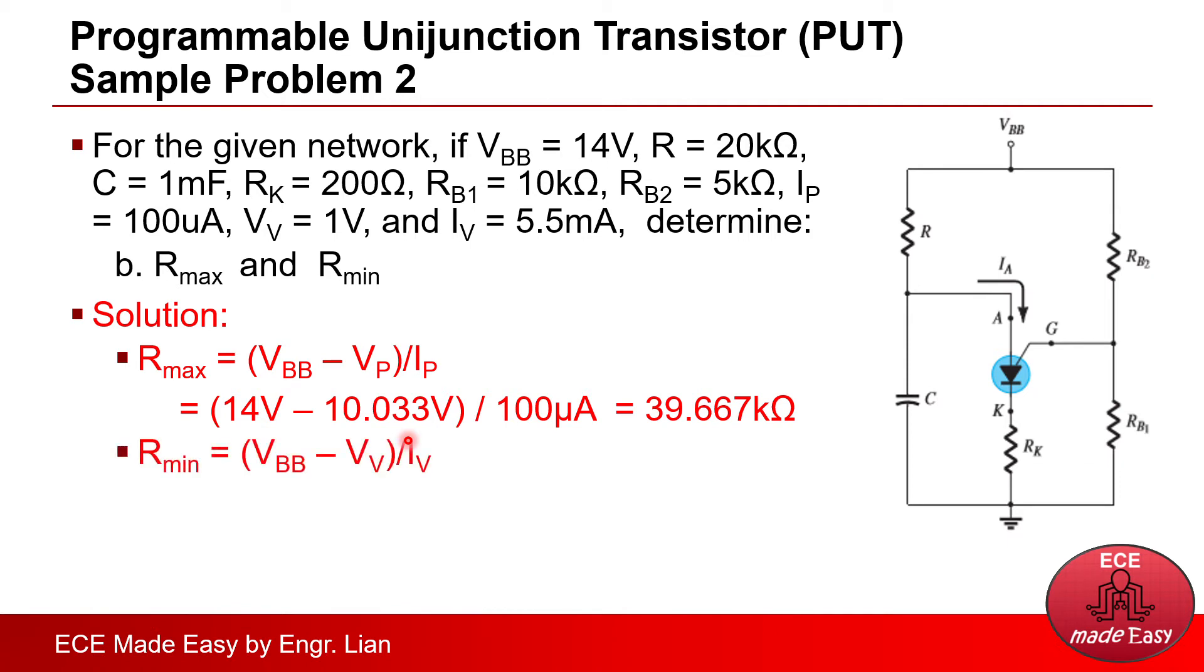Next, for Rmin, the formula is VBB minus V valley all over I valley. And by substituting the values from the given, we will be able to solve the value of Rmin, which is 2.364 kilo ohms.